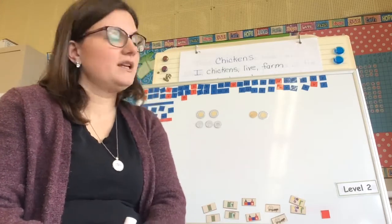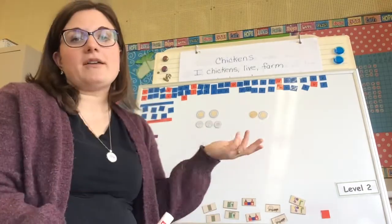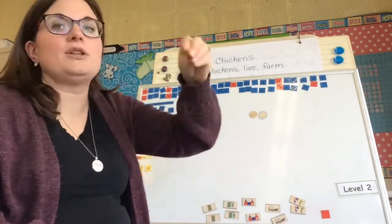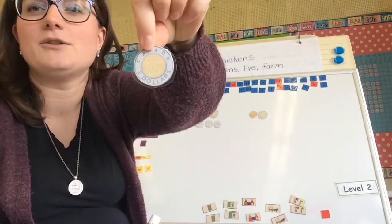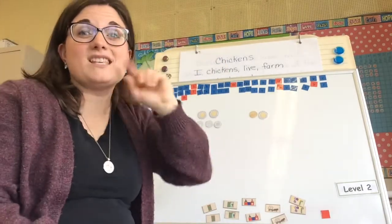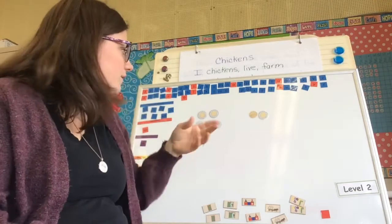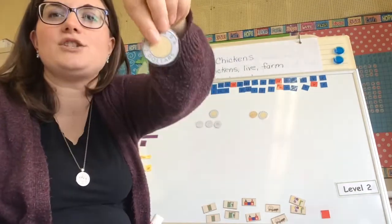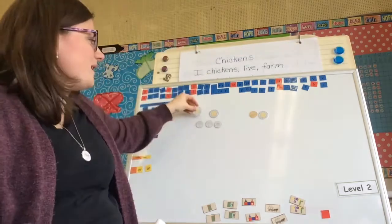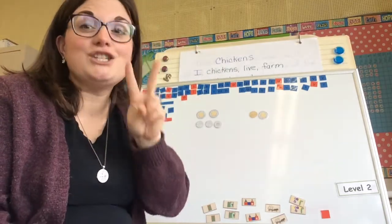We're going to talk about different sets of money. I hope you can see what I've got — I might pull it up a little bit closer. We're going to remember what these coins are called and how much they are worth. So I have two of these. Do you remember what they're called? Toonies. So I have two toonies, and toonies are worth $2.